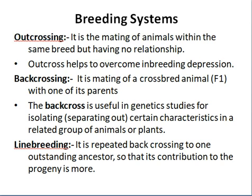Backcrossing is the mating of a crossbred F1 animal with one of its parents. If we mate breed A with breed B and get F1, then mate F1 with either parent A or B, that is called backcrossing. It is useful in genetic studies for isolating or separating out certain characteristics in a related group of animals or plants.